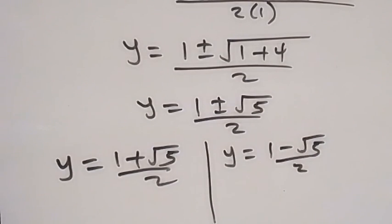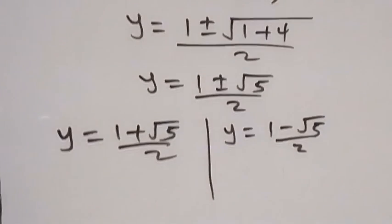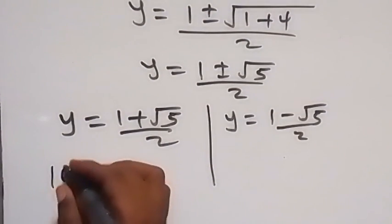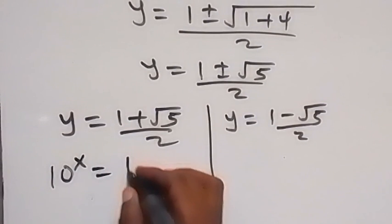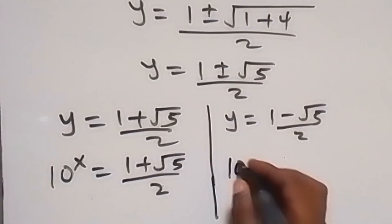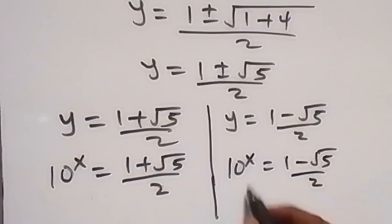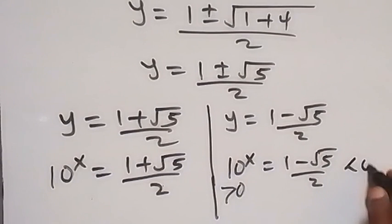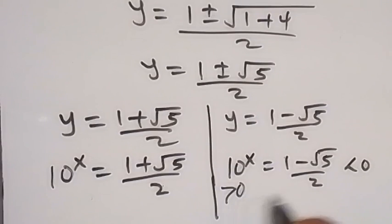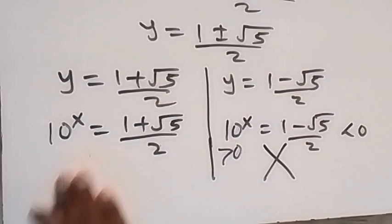The value of y was represented as 10 raised to power x, so we can say 10 raised to power x equals to 1 plus root 5 over 2, and also 10 raised to power x equals to 1 minus root 5 over 2. Here, 10 raised to power x will be positive, but on the second case the value is negative — therefore there is no solution on that side.